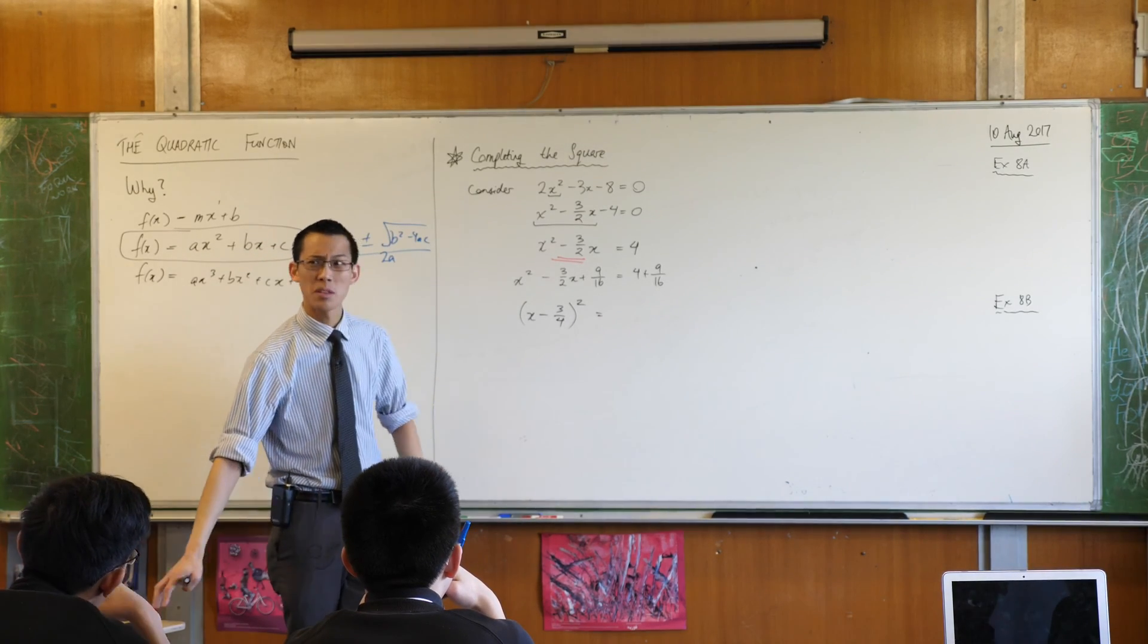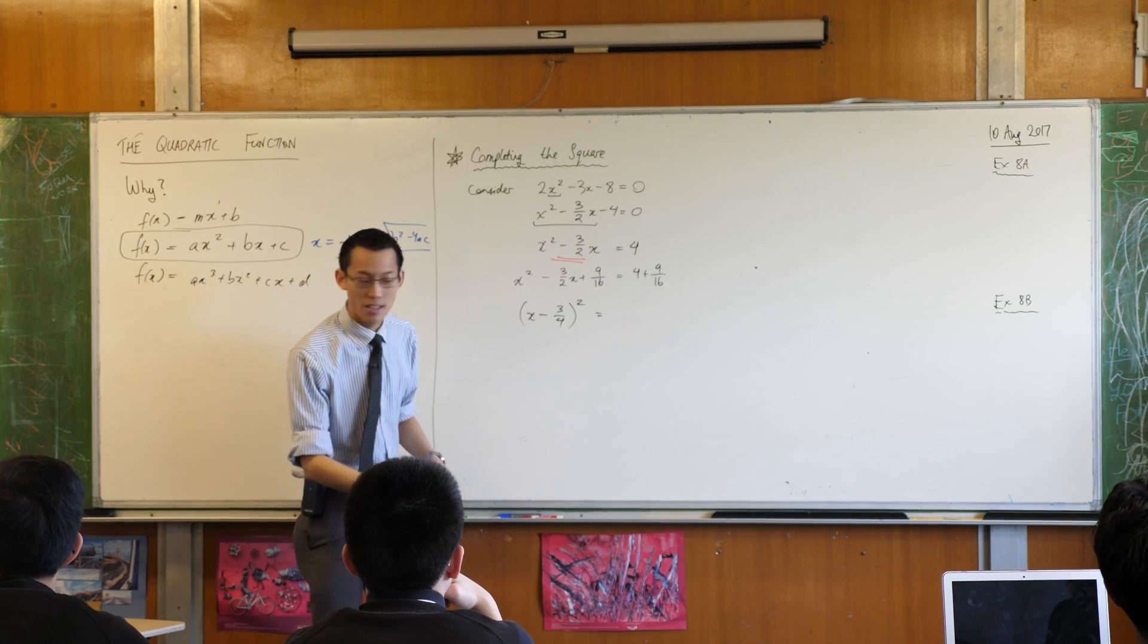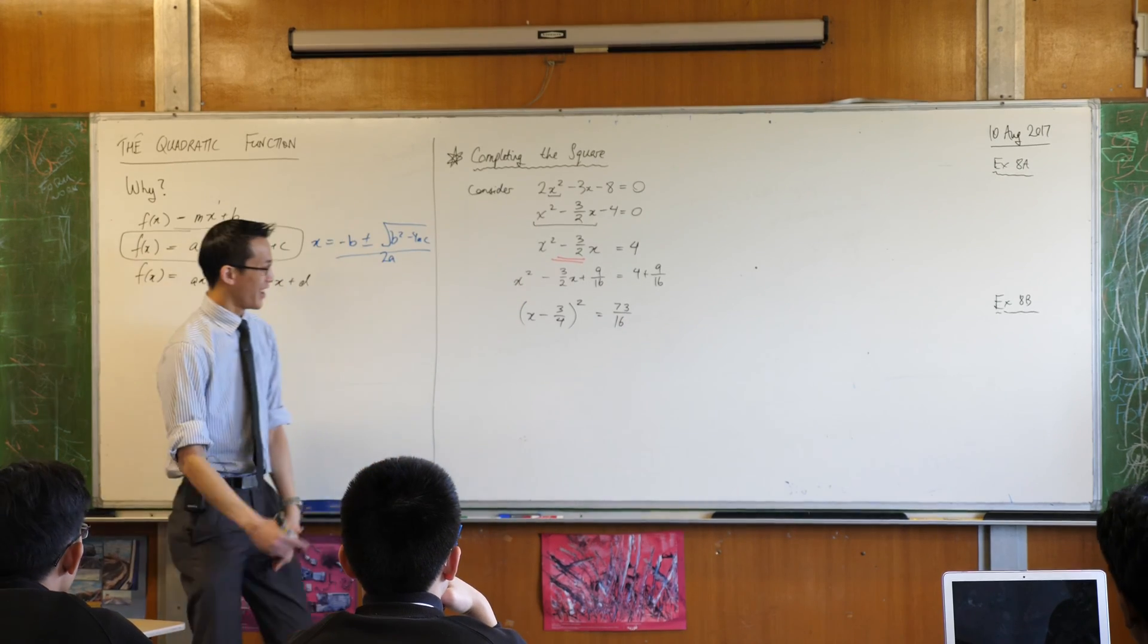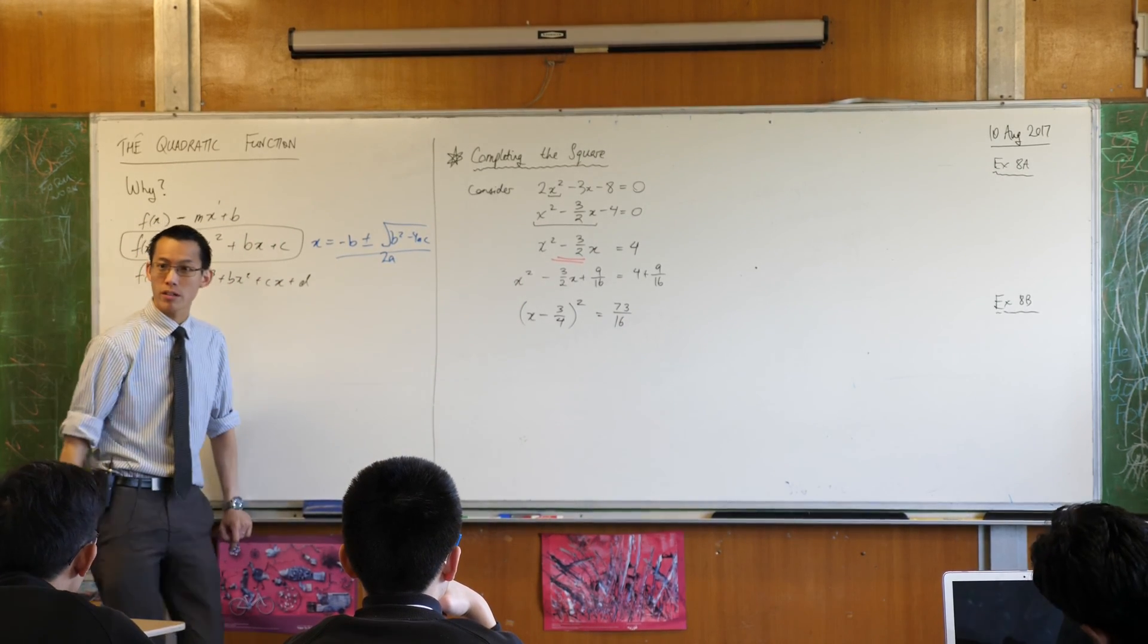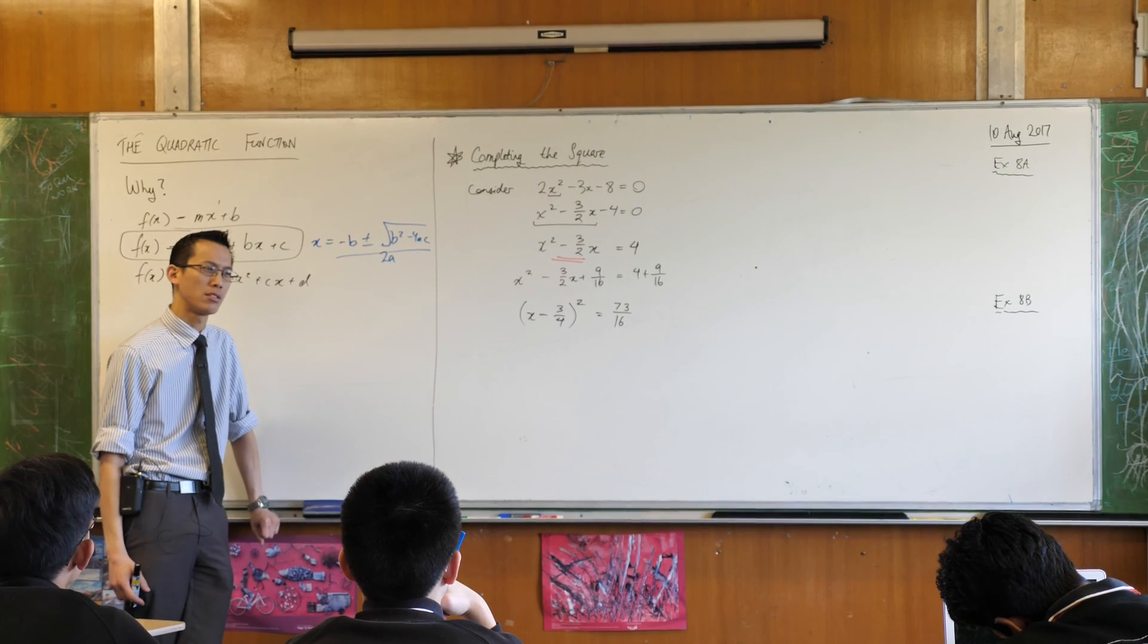4 plus 9 over 16, should we do something with that? 73/16, it's an awkward number because I just made this up. Okay, so this is good, this is progress because I have a factorization, but I haven't solved this, have I? So now what must I do?